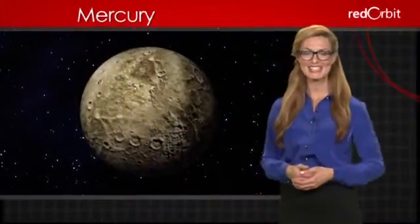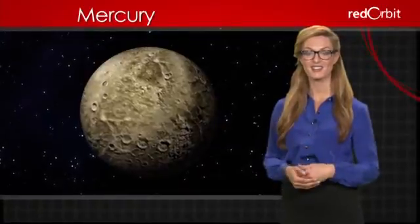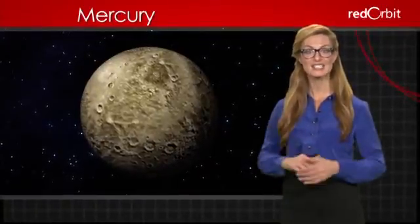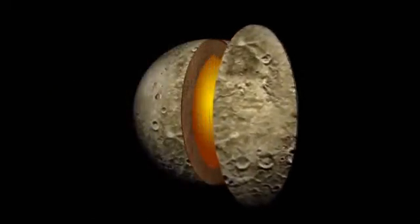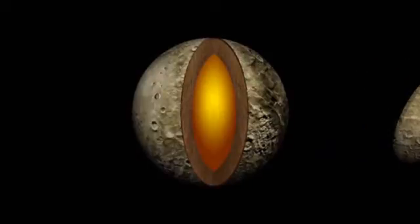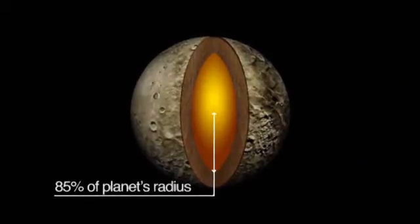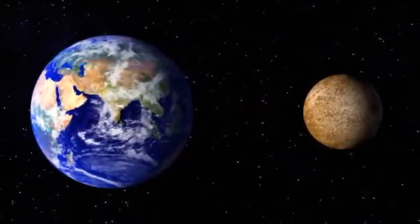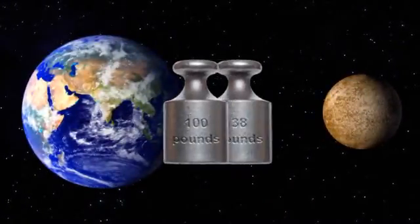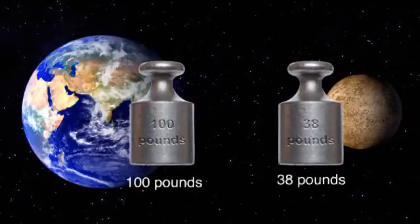Like the other inner planets, Mercury is dense and rocky. In fact, it's the second densest planet next to Earth. NASA's messenger spacecraft revealed that Mercury has a large core, occupying nearly 85 percent of the planet's radius. The planet's small mass means its force of gravity is barely a third of Earth's. A 100-pound person on Earth would weigh only 38 pounds on Mercury.